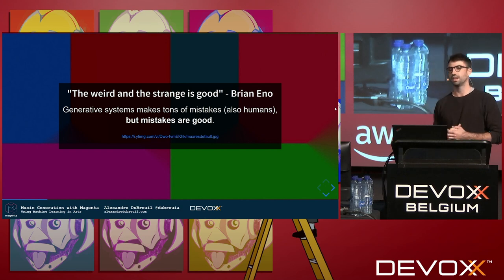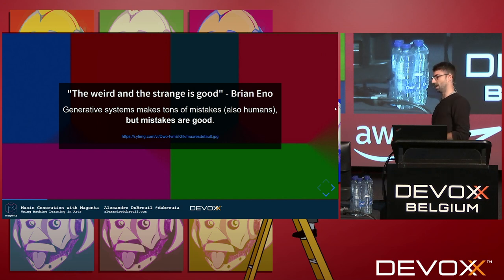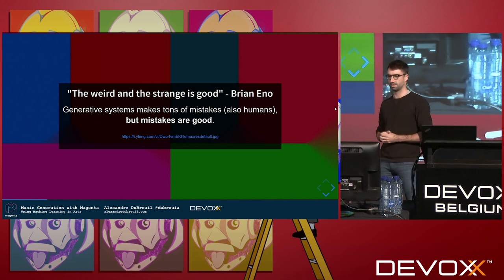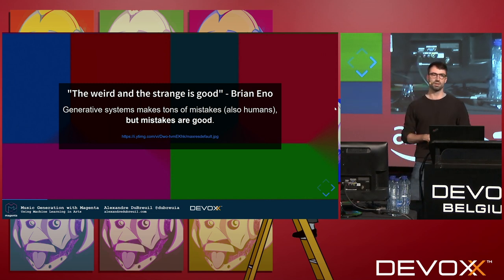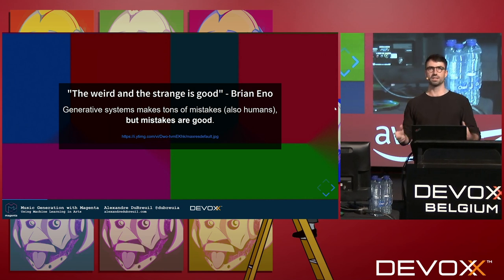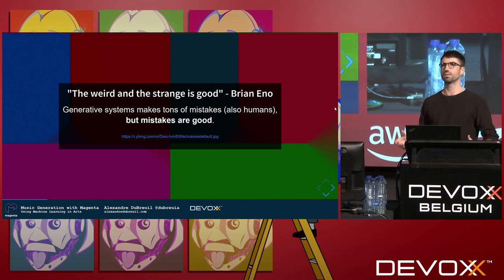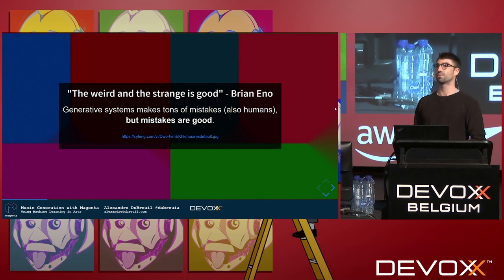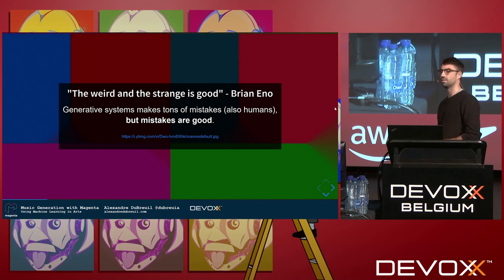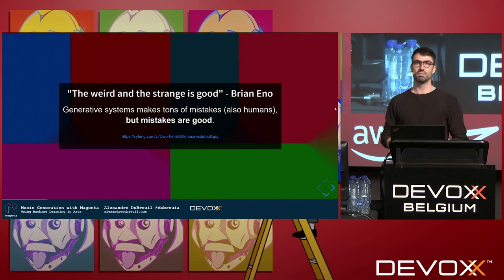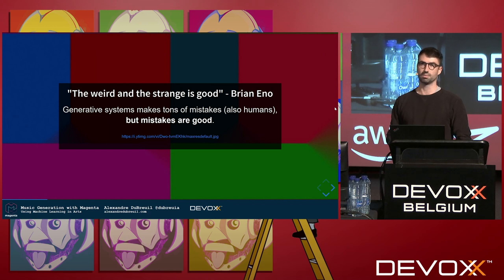The weirdness range is good. Brian Eno is a famous generative music artist, and I think this describes pretty well how I see music personally. I really like it when music is surprising and you hear something new and think, wow, this is crazy. Generative systems make tons of mistakes, and so do humans. But mistakes are good — they're a way of learning and a way of creating something new.